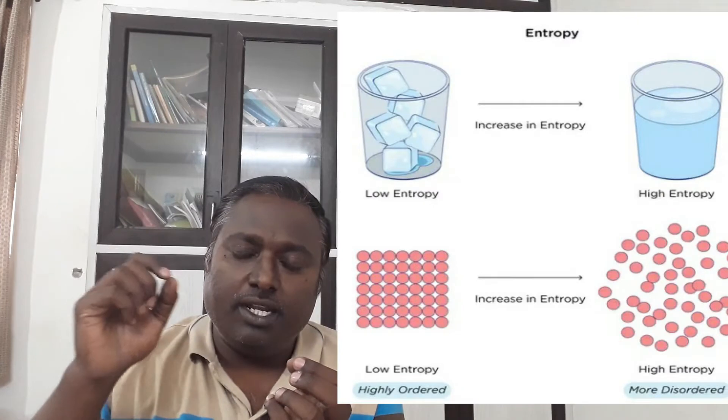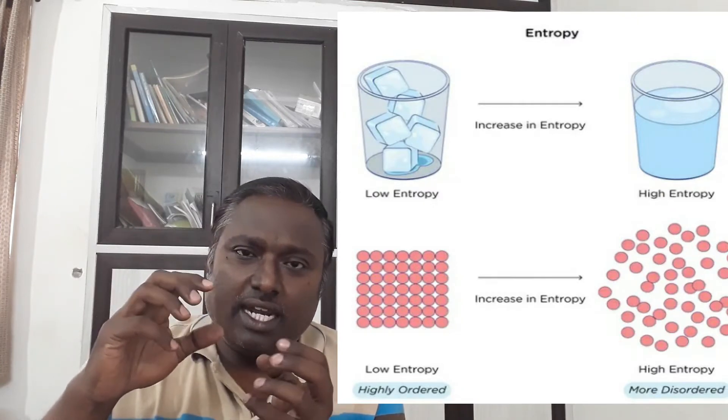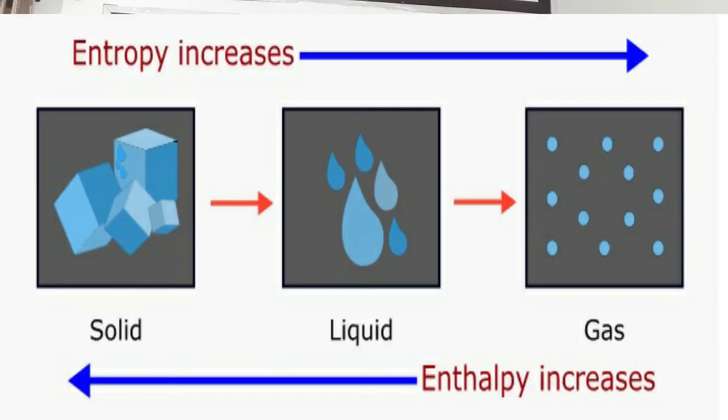Now entropy. Entropy is the total amount of randomness. When we keep increasing the heat energy — say from 100 degrees Celsius to 110 degrees Celsius, 120 degrees Celsius — the randomness of the molecules within this system keeps increasing. The molecules move more and more faster. So entropy talks more about the freedom or randomness of molecules.